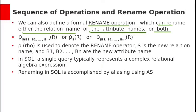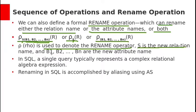The syntax can be in three ways: one where both attributes and relation are renamed, one where only the relation name is renamed, and one where only attributes are renamed. Rho is used to denote the rename operator. S is the new relation name, and B1, B2 up to Bn are the new attribute names. In SQL also, we can rename a relation or attributes of a relation by using aliasing with the keyword AS.